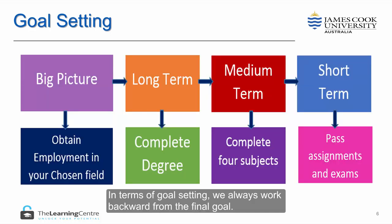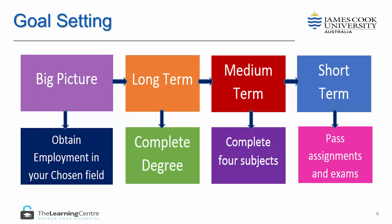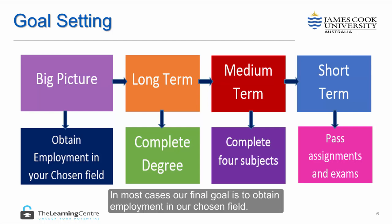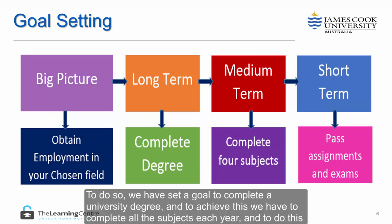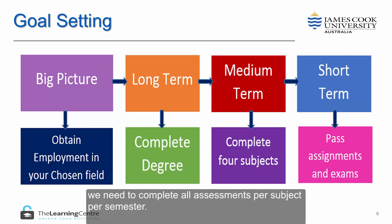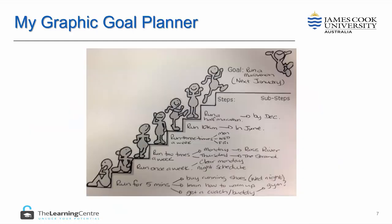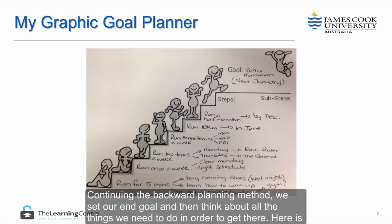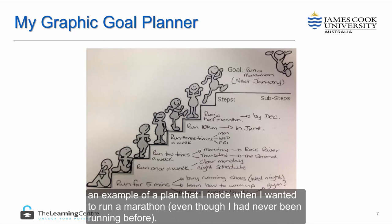In terms of goal setting we are always working backward from the final goal. In most cases our final goal is to obtain employment in our chosen field. To do so we have set a goal to complete a university degree, and to achieve this we have to complete all the subjects each year, and to do this we need to complete all assessments per subject per semester. Continuing the backward planning method, we set our end goal and then think about all the things we need to do in order to get there. Here is an example of a plan that I made when I wanted to run a marathon even though I had never been running before.